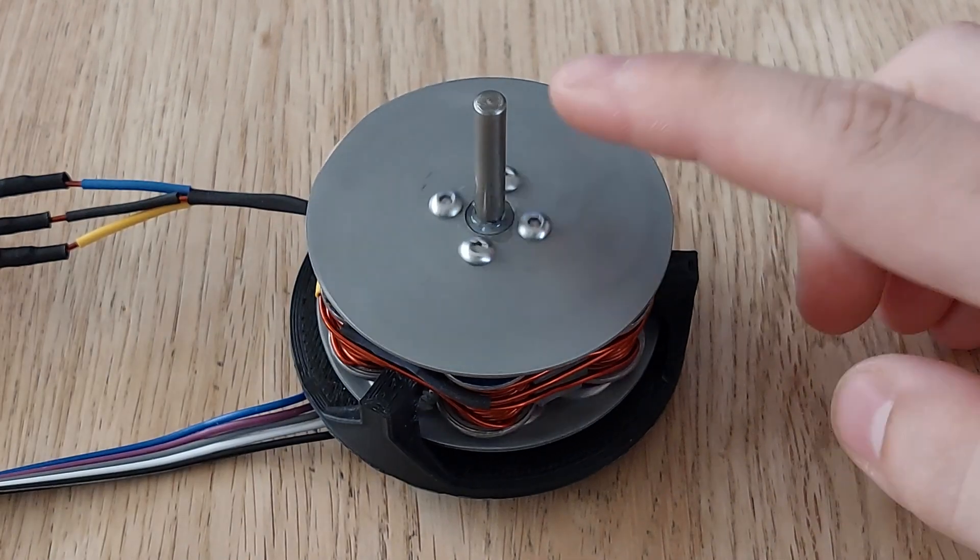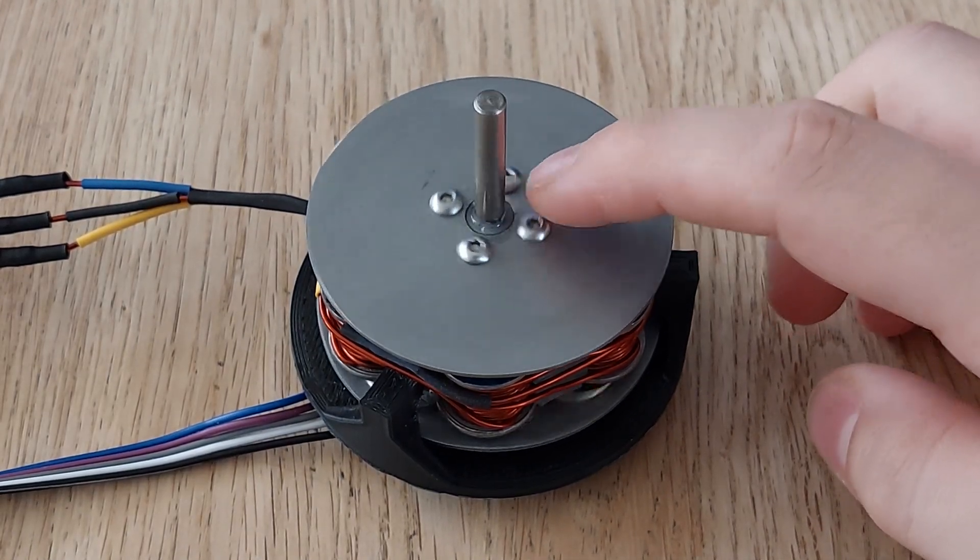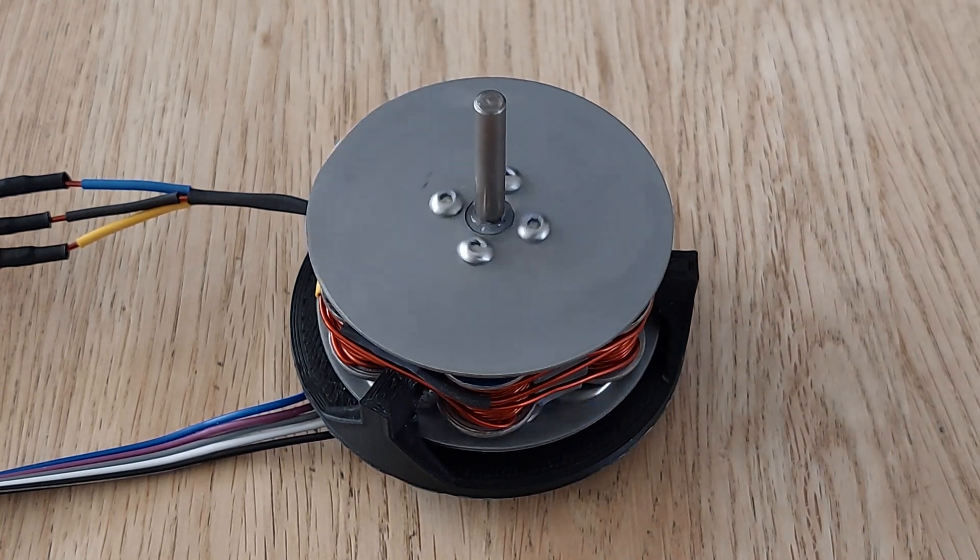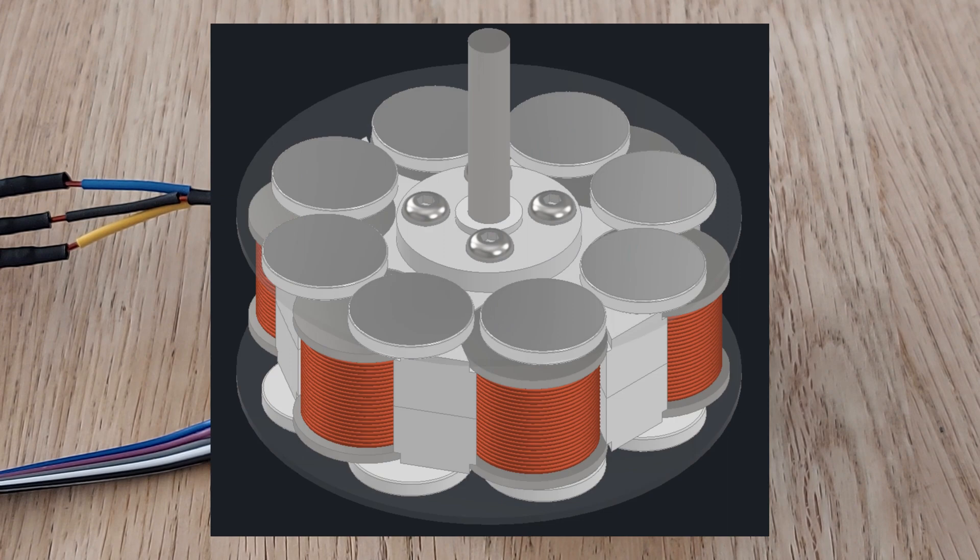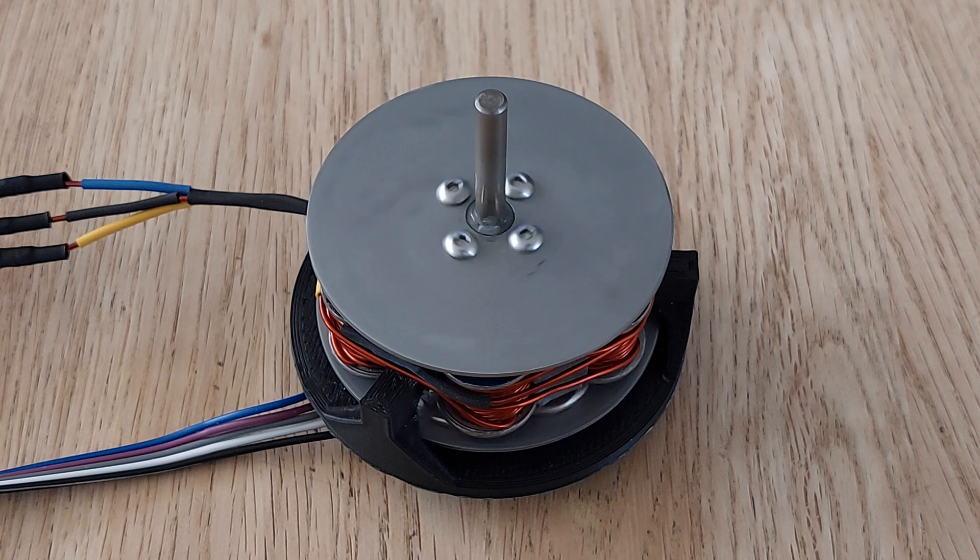These are bound together by the shaft and two 3D printed parts that you can see right here in the center. My design uses six concentrated windings and eight magnets on each disc. This is one of the possible configurations.